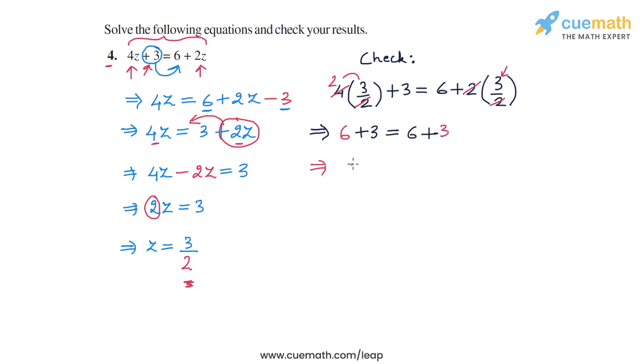So on both sides, we get 9 and 9. And hence, the solution checks out. The solution z is equal to 3 by 2 is the correct solution for this equation.